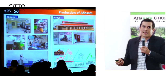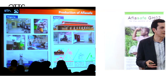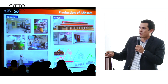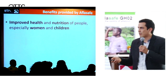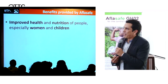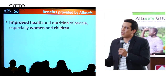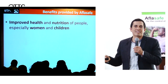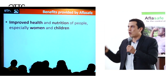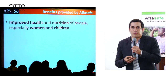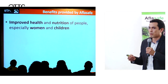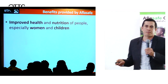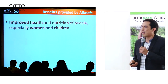Once a company from Ghana wins this licensure, they will most likely have one of these facilities constructed. The benefits of using Aflasafe include zero or very low aflatoxin concentrations in consumed crops — groundnut, sorghum, and maize — resulting in improved health and nutrition of people, especially women and children.